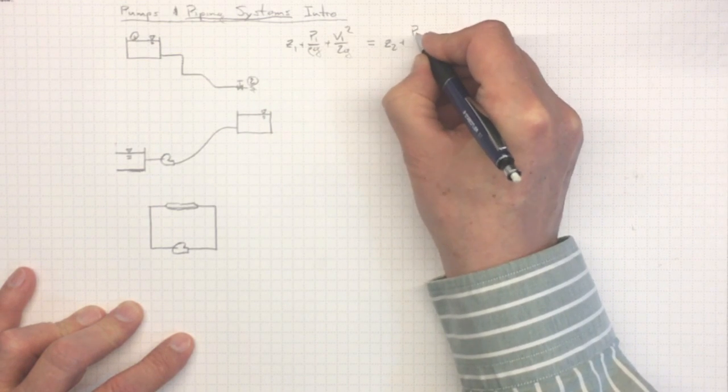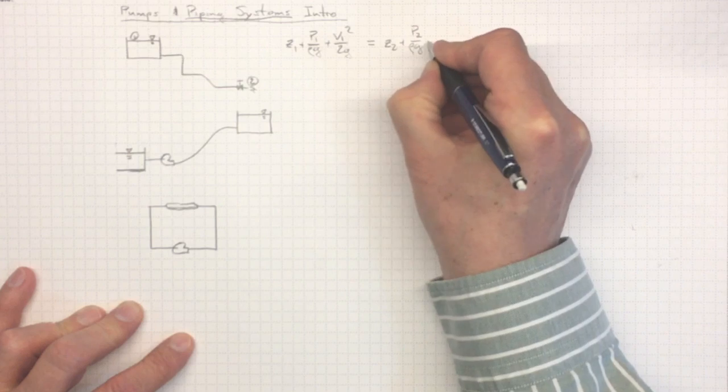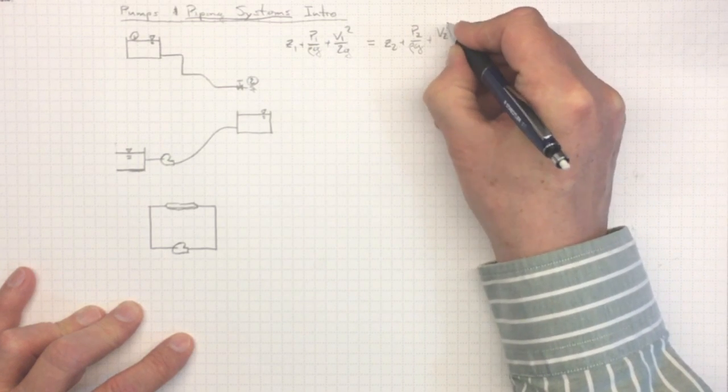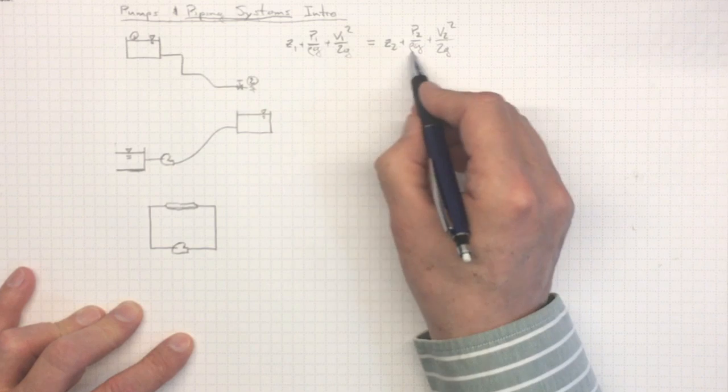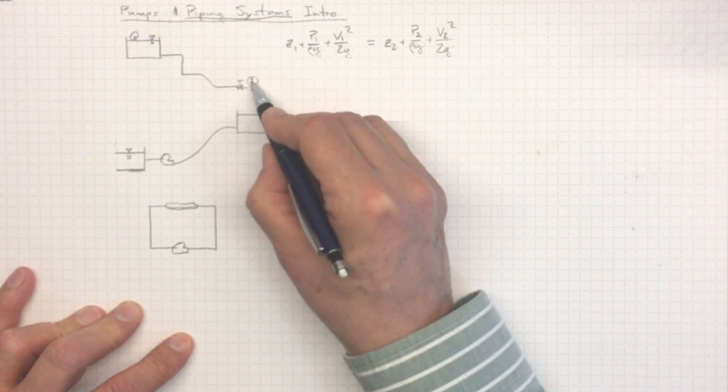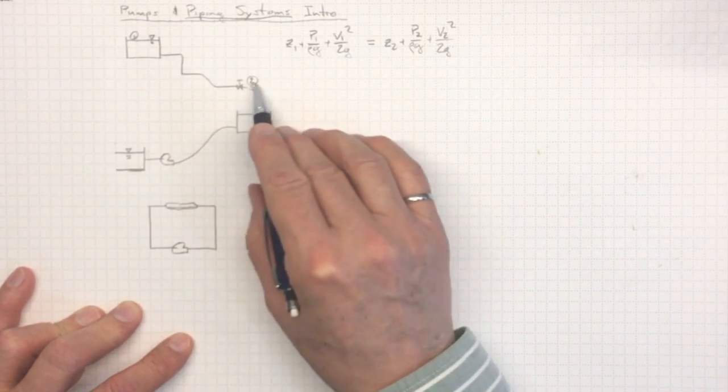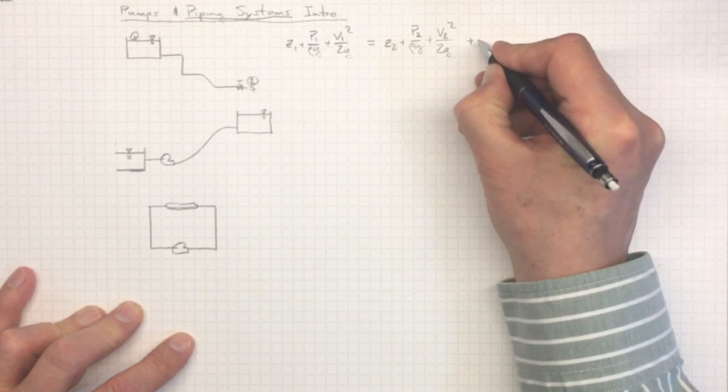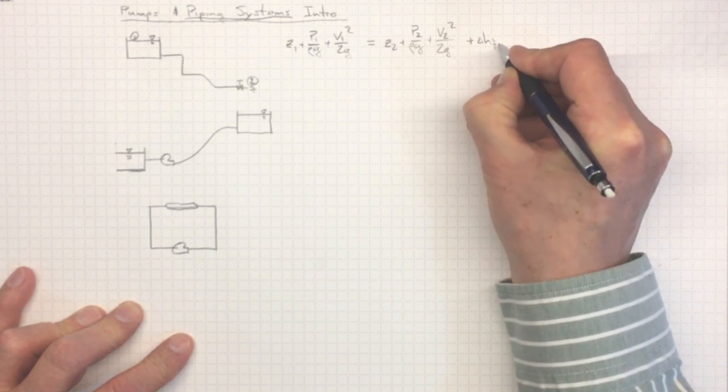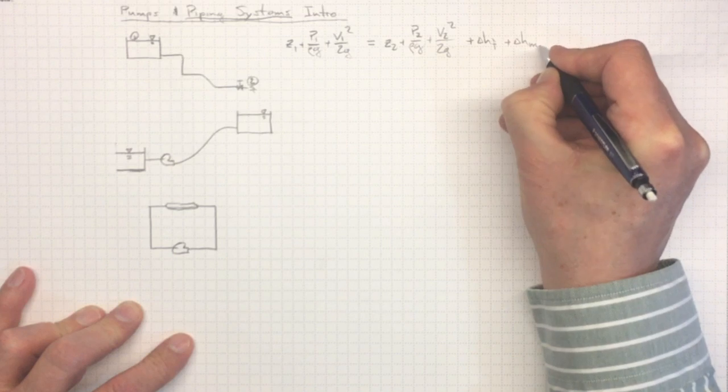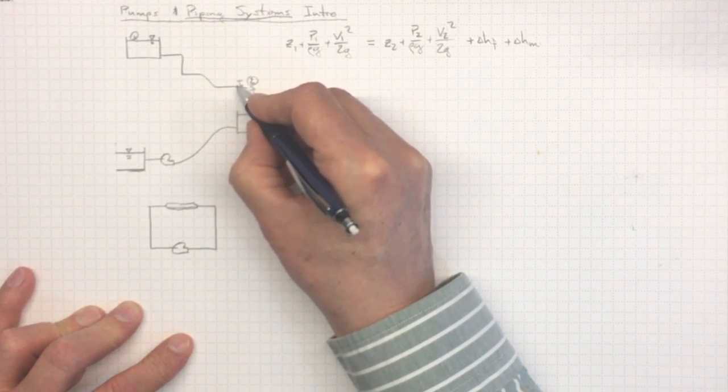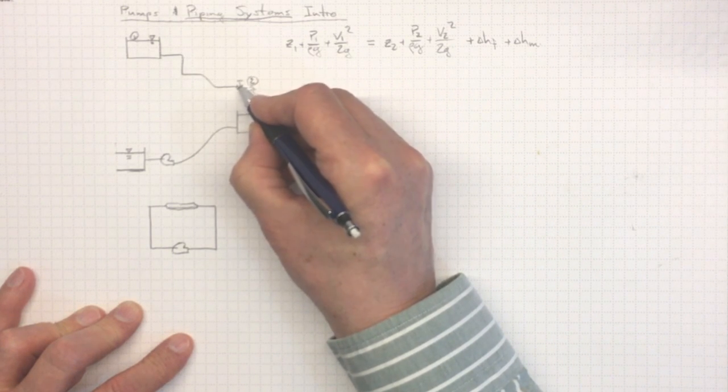So Z2 plus P2 over rho g plus V2 squared over 2g. That's the kinetic energy and potential energy at location two, unless we lost something along the way. And we'll have losses due to friction on the pipe walls and minor losses due to recirculation and secondary flows.